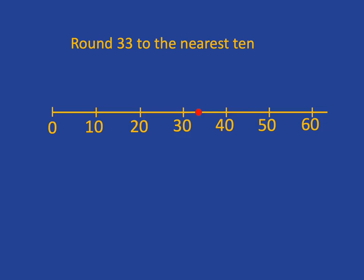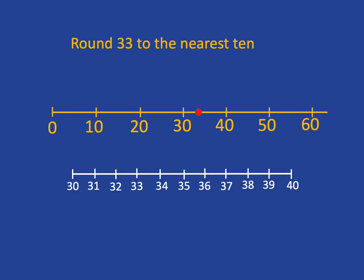Let's look at that in a little more detail. We know that 33 lies between 30 and 40, and the halfway mark between 30 and 40 is 35. Where is 33? It's sitting below the halfway mark, so it's fairly obvious it's going to take a lot more to get from 33 to 40 than from 33 to 30. So rounding 33 to the nearest 10 gives you 30.